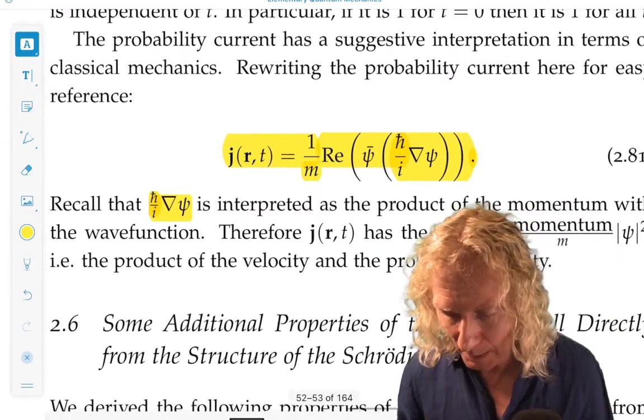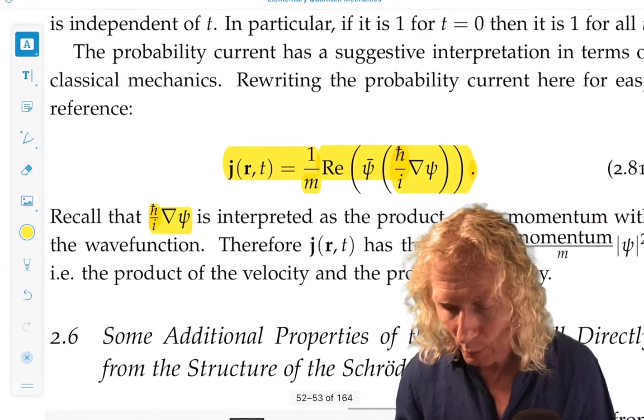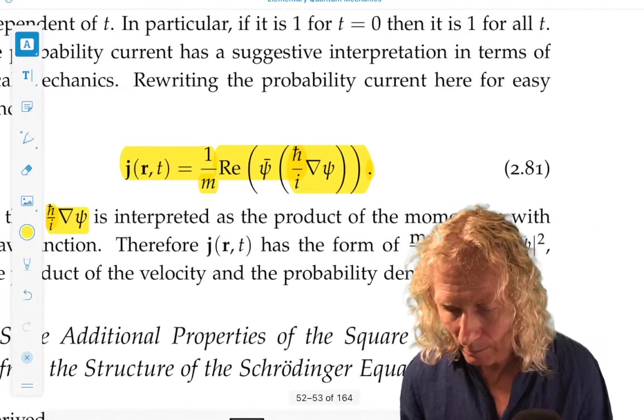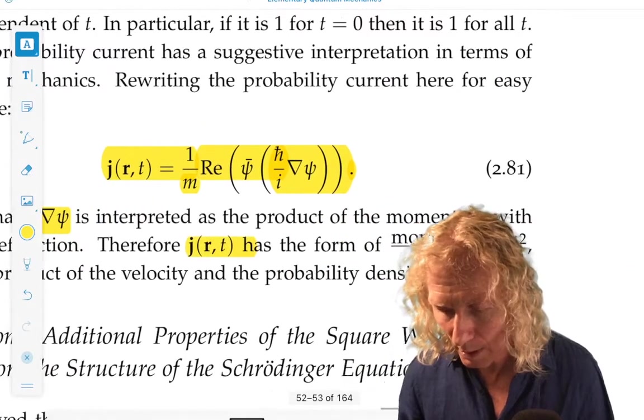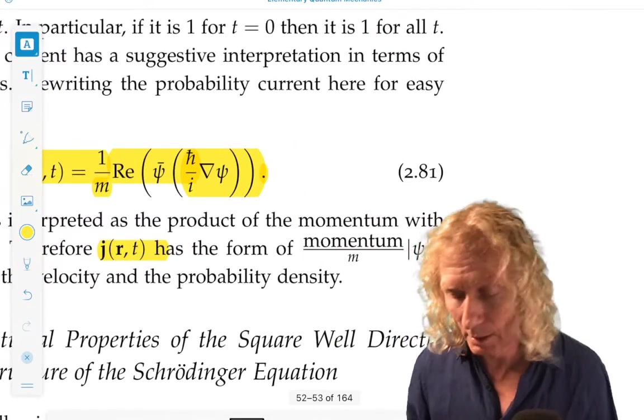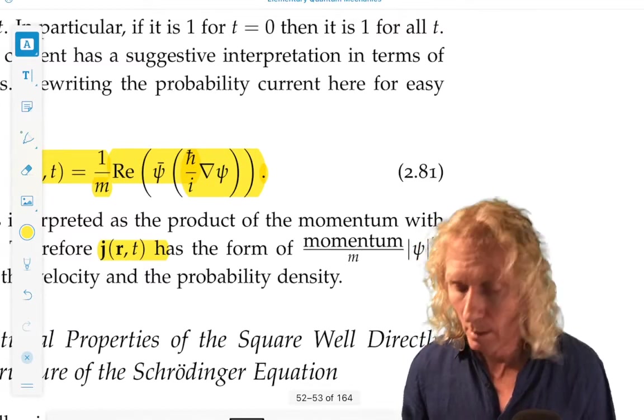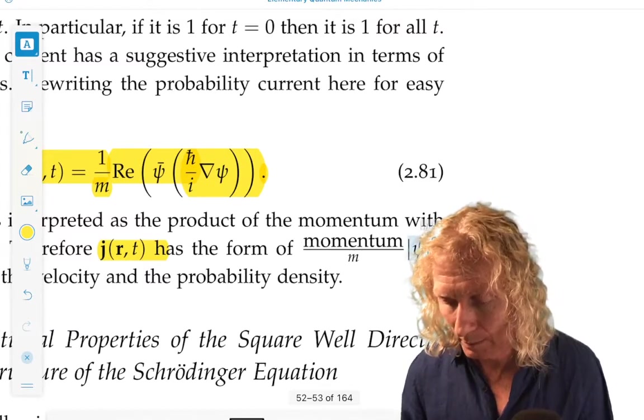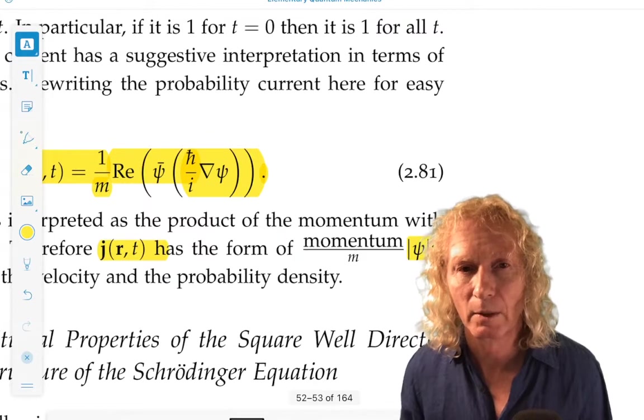Therefore, the probability current has the form of, remember there's a 1 over m there, momentum divided by m, velocity, multiplying probability density.